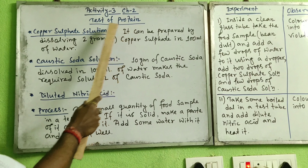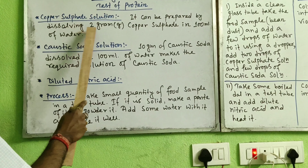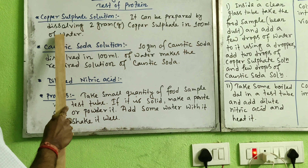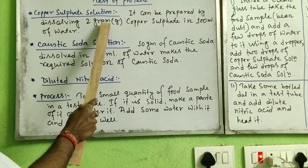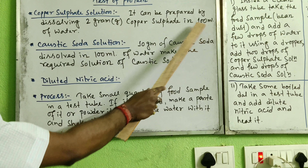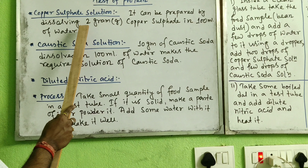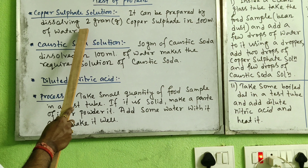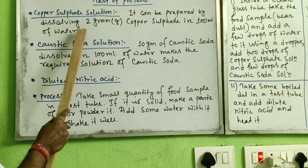First, to test for protein, you need to prepare copper sulfate solution. It can be prepared by dissolving 2 grams of copper sulfate in 100 ml of water. In the lab you can easily get copper sulfate. Take 2 grams using a spatula, place it in a test tube, and add 100 ml of water to prepare the copper sulfate solution. Its color will be light blue or sometimes deep blue. Another name for copper sulfate solution is blue vitriol.